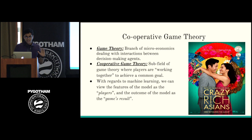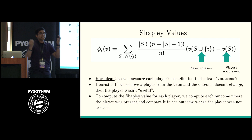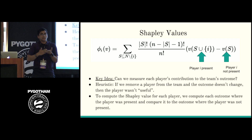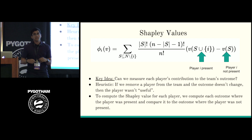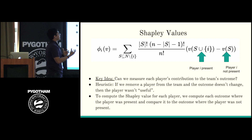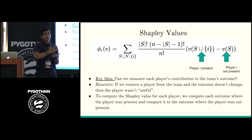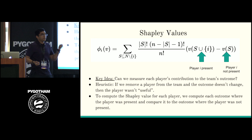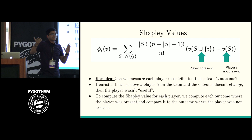We're going to use something called Shapley values. When you have a team, not everyone contributes equally — in a team project, there's one person who does all the work and one person who does nothing at all. The key idea is: can we measure each person's contribution to the team outcome? The heuristic is that if you remove that person from the team and the outcome doesn't change, they weren't useful. Applied to machine learning: if we remove a feature from the model and the model still makes the same prediction, was that feature actually useful?